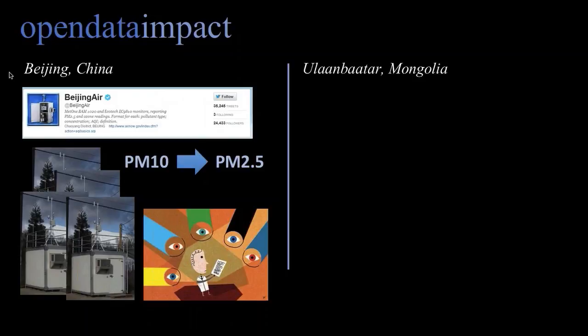That conversation shifted the way air pollution is measured across Beijing and China. It created a focus on a more health-relevant pollutant — from PM10 to PM2.5. It expanded monitoring done both in Beijing and across China, and there was greater discussion around transparency — why Chinese data used a certain air quality index and why that varied from the US. I was amazed that one little monitor could have such an outsized impact on the community.